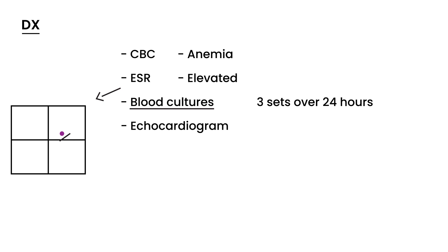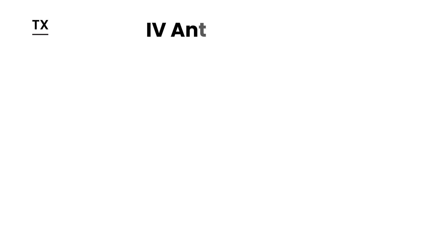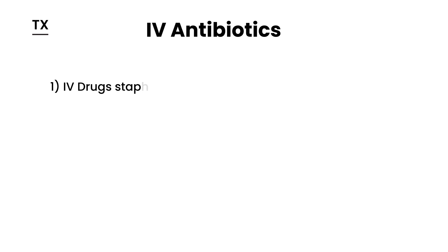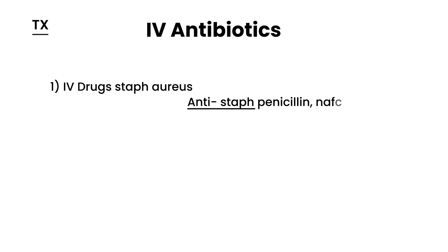The mainstay of treatment is IV antibiotics. Breaking it down into three categories: first, IV drug users are most commonly infected with staph aureus, and they are given anti-staph penicillins. These include nafcillin and oxacillin — nafcillin is probably the most common.